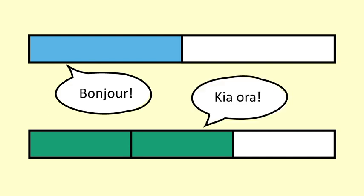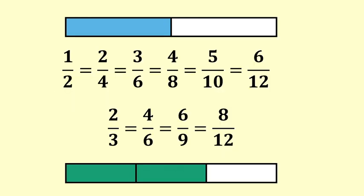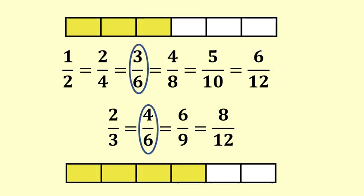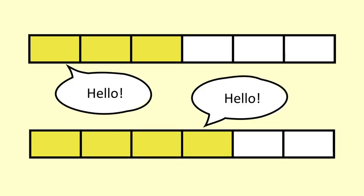It's like the half speaks French and the 2 thirds speaks Māori — they cannot talk to each other in their own languages. They need to find a common language to talk to each other. Here are different ways that 1 half and 2 thirds can be expressed. What denominators will work for them to talk to each other? They can use 6ths or 12ths. It is simpler to use the lowest common denominator — in this case 6ths — but it will still work if you use a different common denominator. Finding a common denominator means that the fractions are speaking the same language.